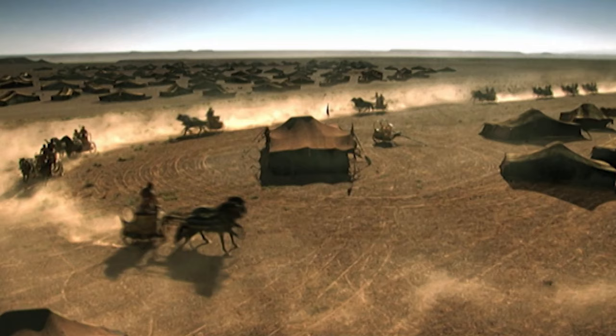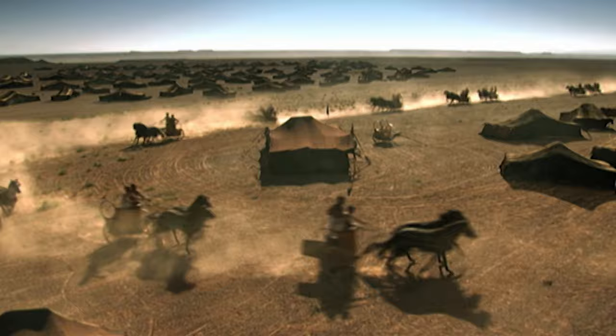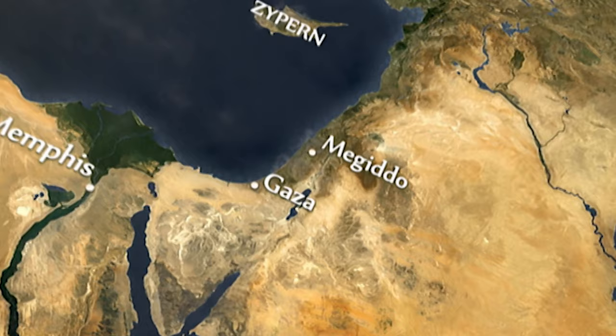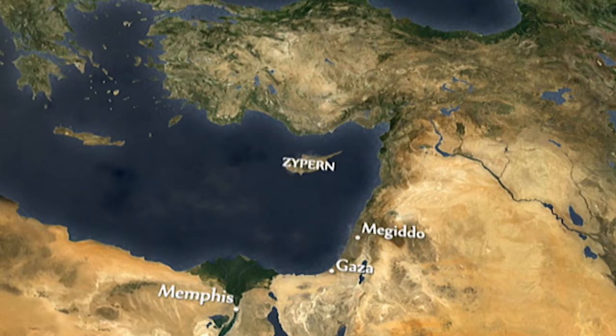Megiddo lies far from Egypt, but the region around the city is of enormous importance for the security of the pharaoh's empire. The rulers here were once held in Egypt's sway, but now the hostile kingdom of Mitanni has drawn the local kings onto its side. Thutmose must crush the enemy alliance to protect his country from foreign rule.